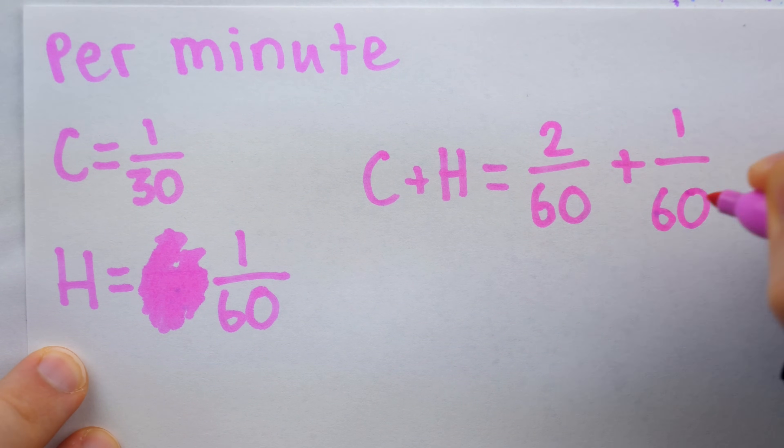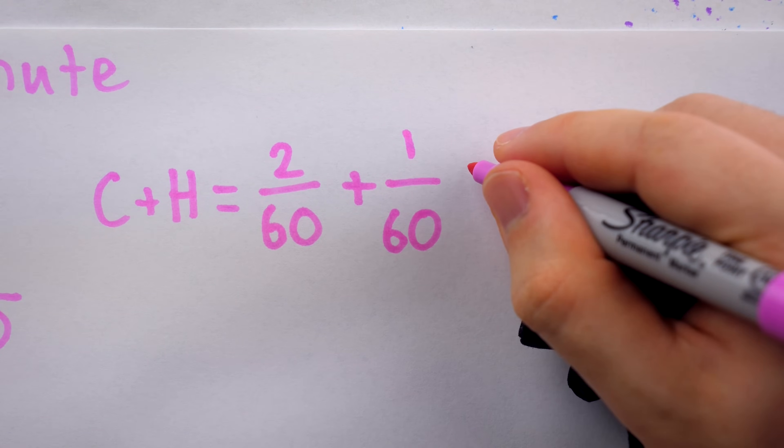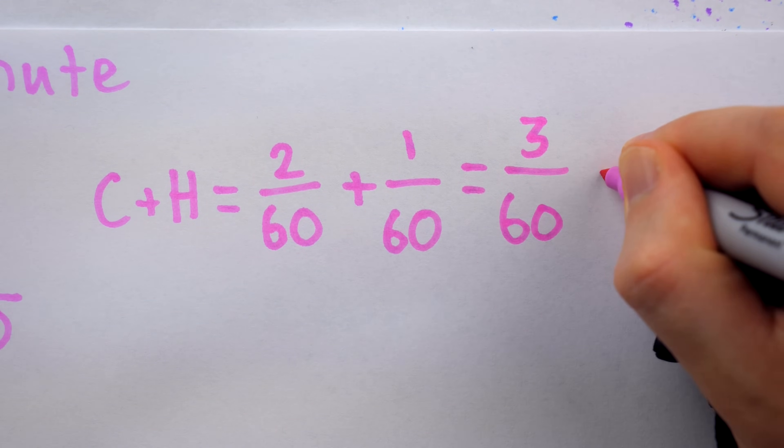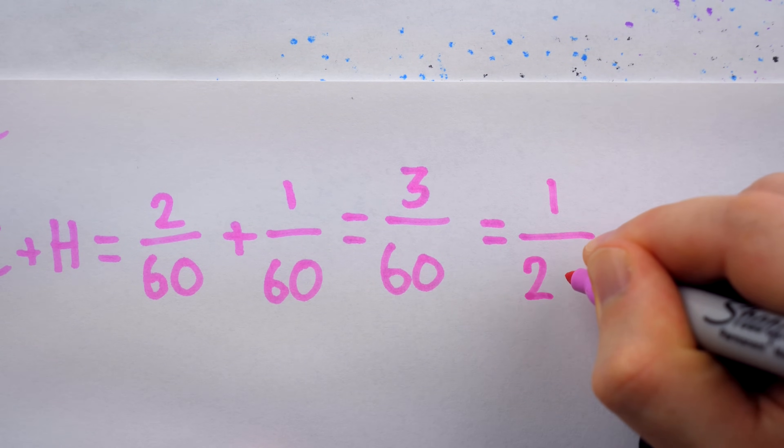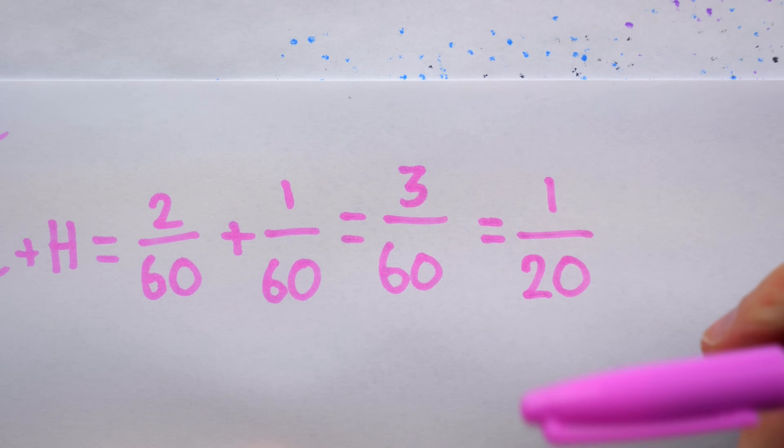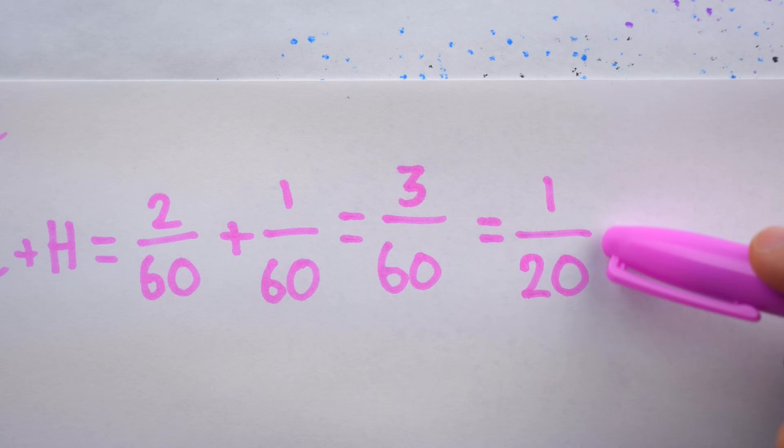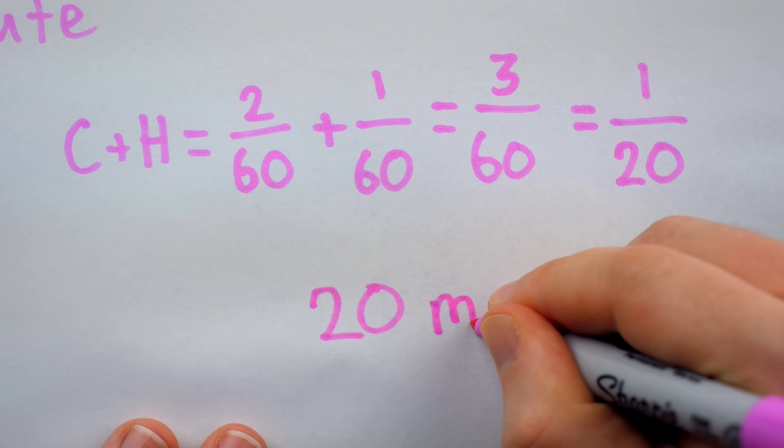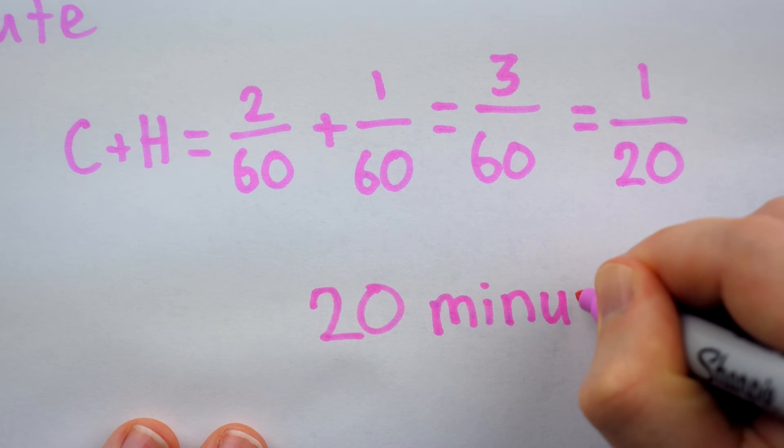In total, we get 3 over 60, which can be reduced to 1 over 20. That means that each minute, the cold and the hot water together will fill up 1/20th of the tub. Since that's how much is filled each minute, it will take 20 minutes total to fill up the tub when the cold and the hot water faucets are running.